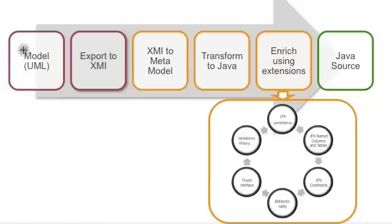So first you will model in UML. Then you will export it to XMI. The XMI will then be read into a metamodel in memory. It will then be transformed to Java, but it will still be in memory. So you can query it, you can manipulate it in every way you like. You can enrich it using various extensions — we have a lot of them built in, like JPA persistence, JPA named columns and tables.